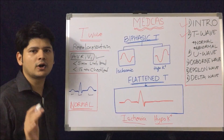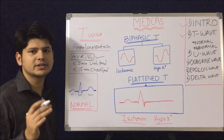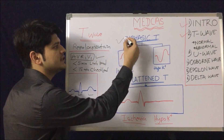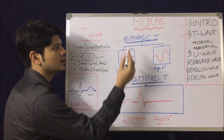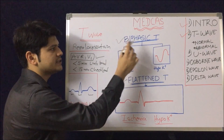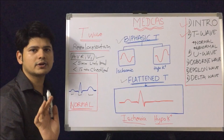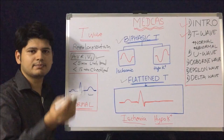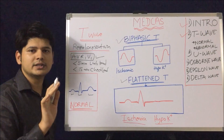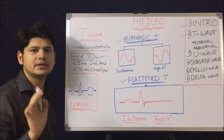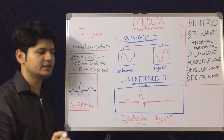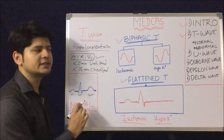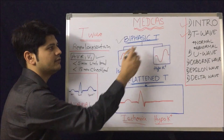We have understood about tall T and inverted T. Now let's revise the normal T wave before moving on. Normal T wave is negative in AVR and V1; in all other leads it is positive. Amplitude in the limb leads is less than 5 mm, and in the chest leads less than 15 mm. Now let's understand the next topic: biphasic T wave.